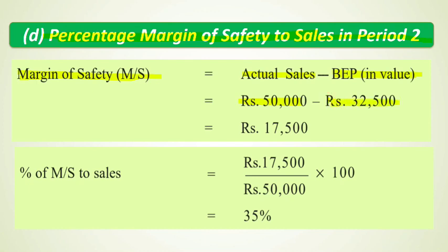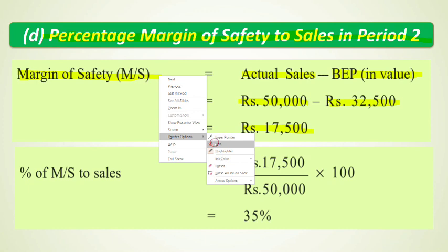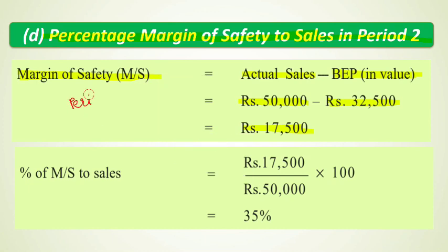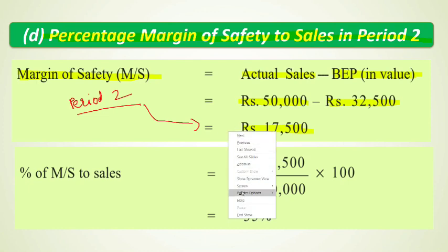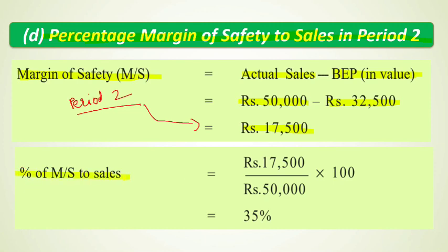For Period 2, actual sales = ₹50,000 and break-even point = ₹32,500. So Margin of Safety = ₹50,000 minus ₹32,500 = ₹17,500. To find the percentage margin of safety to sales, the formula is: Margin of Safety divided by Sales multiplied by 100 = ₹17,500 / ₹50,000 × 100 = 35%.